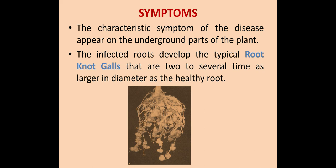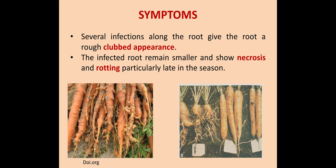Several infections along the root give the root a rough clubbed appearance, as we see in the carrot. The infected root remains smaller and shows necrosis and rotting, particularly late in the season. Necrosis means the infected part becomes dead and discolored, while rotting is the softening, discoloration, and disintegration of the infected part.